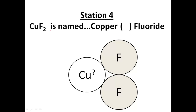Here's another copper compound — last time copper had a 4+ charge, this time it will be different. Press pause and try to name it. Fluoride has a 1− charge, and with two fluorines the total negative charge is 2−. I need 2+ to balance that, distributed over one copper atom. Therefore this is copper(II) fluoride.